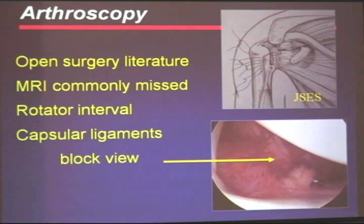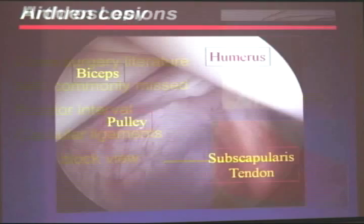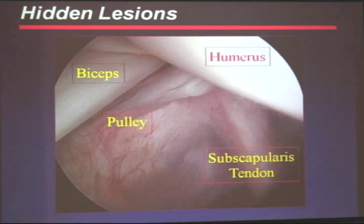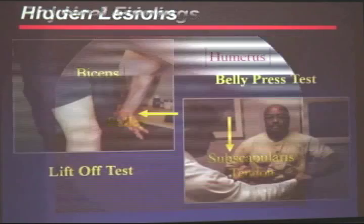When we stick a scope in the back of a shoulder, we're looking at the posterior capsule ligaments and may not always appreciate pathology behind them, which would be the subscapularis. With the scope posteriorly on a right shoulder, we see the biceps, the medial pulley system — portions of the superior glenohumeral ligament — and the articular view of the subscapularis tendon as it enters up to the humeral head.